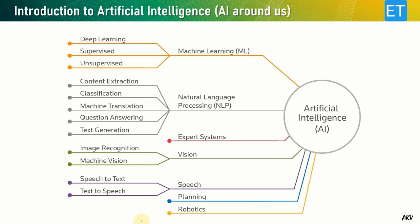AI is a really huge area with many branches. The most popular is machine learning, which includes deep learning, supervised learning, and unsupervised learning. Deep learning utilizes deep neural networks such as convolutional neural networks. Natural language processing is another popular branch covering content extraction, classification, translation, question answering, and text generation. Expert systems can suggest solutions based on symptoms or question-and-answer inputs.